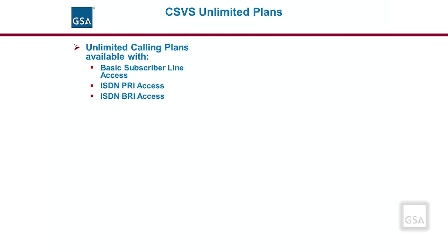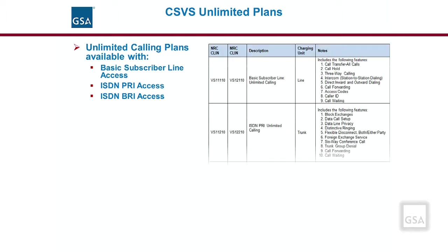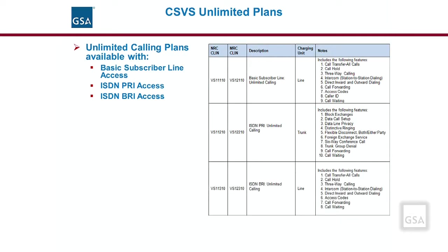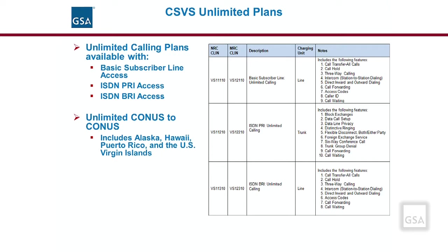The unlimited flat rate CSVS calling plan does not include access in the pricing. Access is a separately priced item. As shown in the table, there are a number of standard features that are included with each type of line. Unlimited plans are unlimited within specific calling areas.